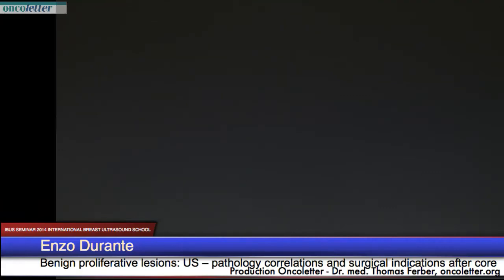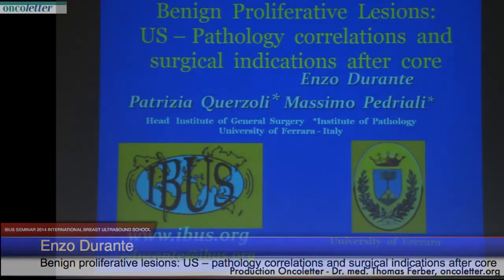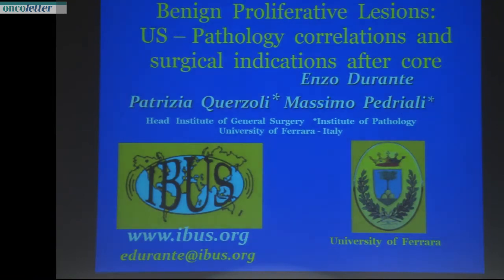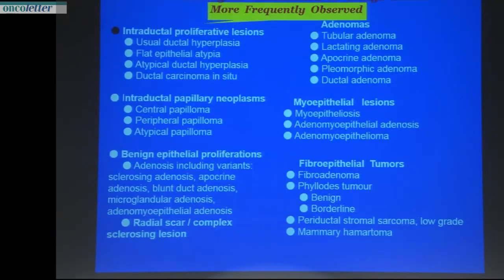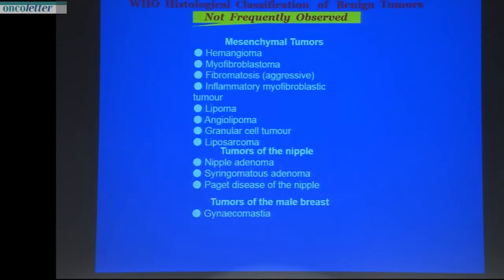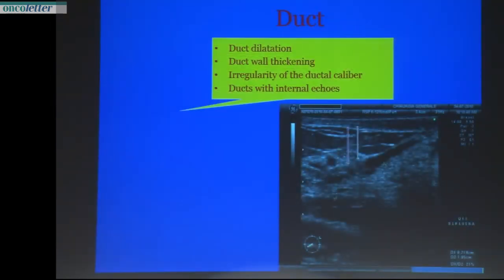I apologize to Susanna and Christophe because speaking about proliferative lesions it is practically impossible not to touch the high-risk lesions. My first goal for benign breast diseases has been to avoid, as much as possible, the number of surgeries for benign lesions we must perform.